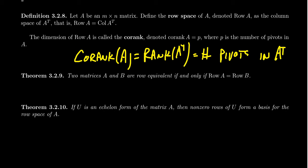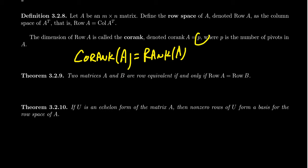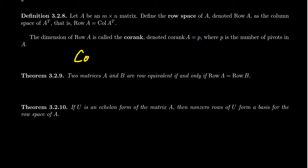So co-rank, which is the dimension of the row space, isn't actually a new quantity — you don't hear a lot about it because the co-rank is always equal to the rank. The rank and co-rank of a matrix are always equal to each other because they both equal p: rank counts the number of pivot columns, co-rank counts the number of pivot rows, and that's just the number of pivots. But if you do see discussion of co-rank, it means the dimension of the row space — the number of pivot rows.